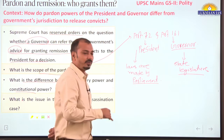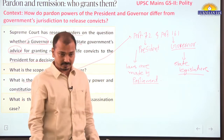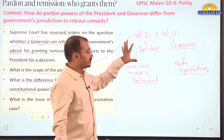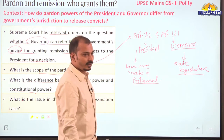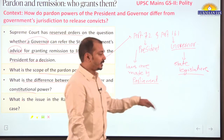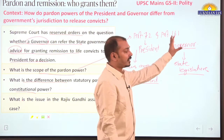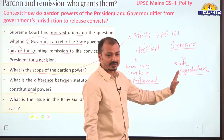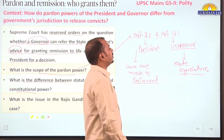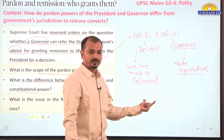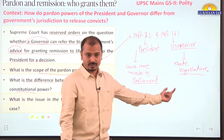One more difference: the Governor cannot pardon the death sentence altogether. Simply understand that the President can pardon the death sentence, not the Governor. The Governor only has the option to refer to the President. Also, the President can pardon those convicted under court martial, but the Governor cannot. The reference is given not under Article 161, but under CrPC.